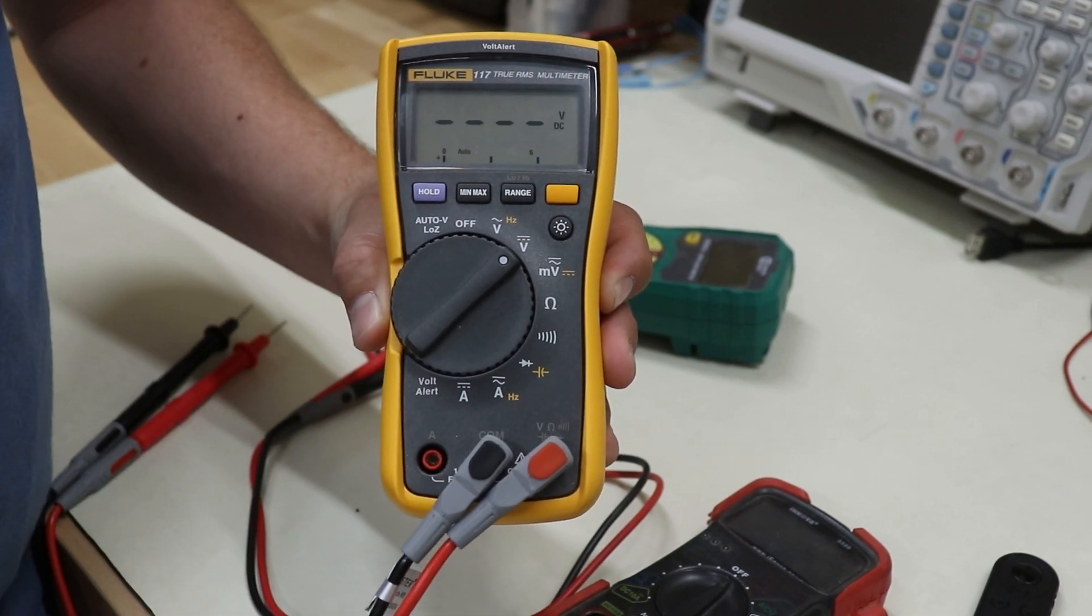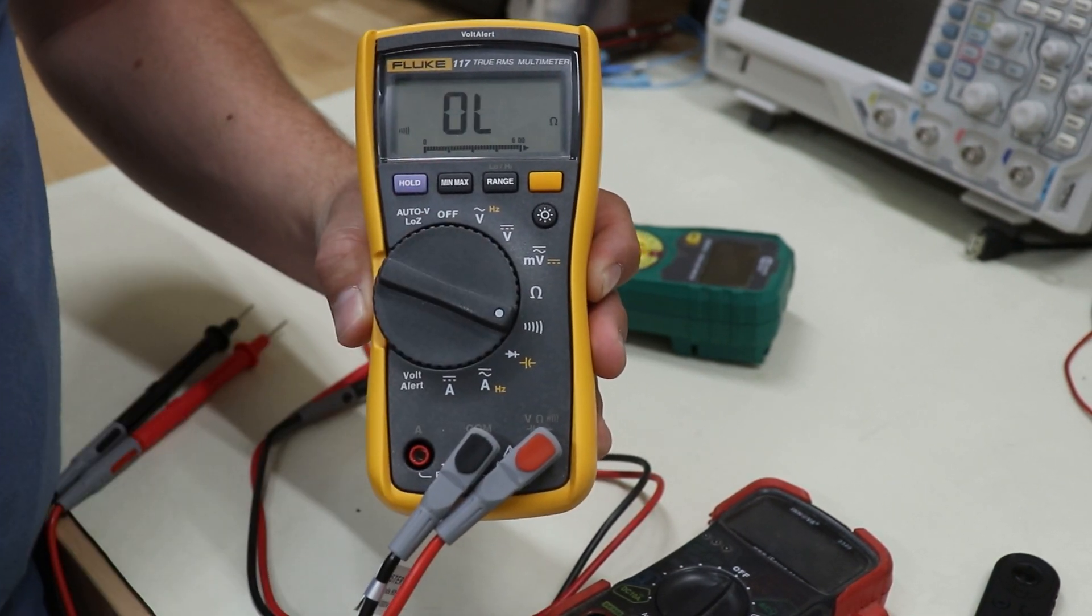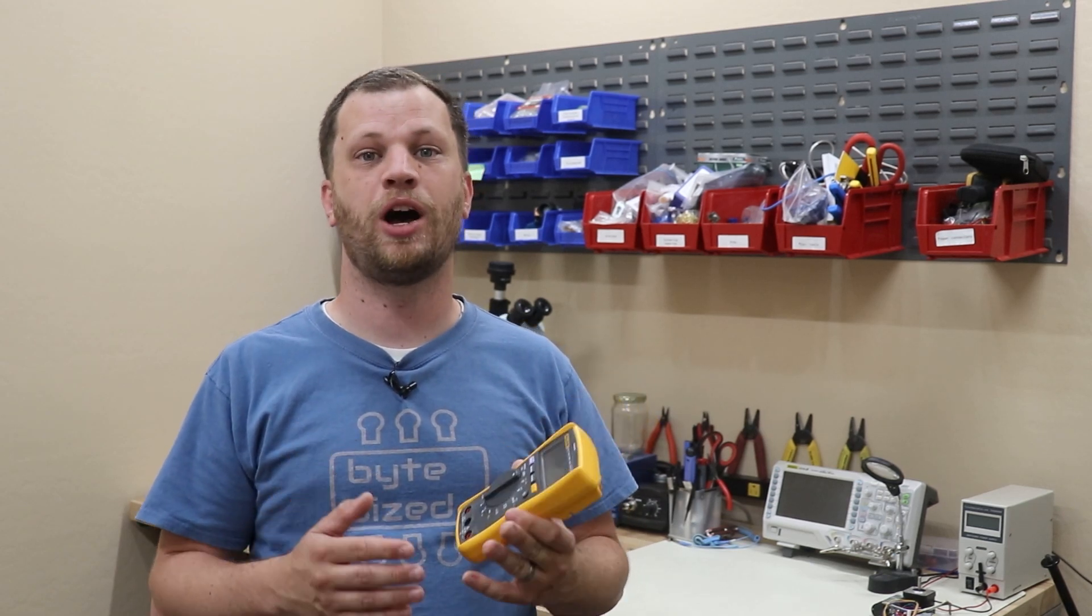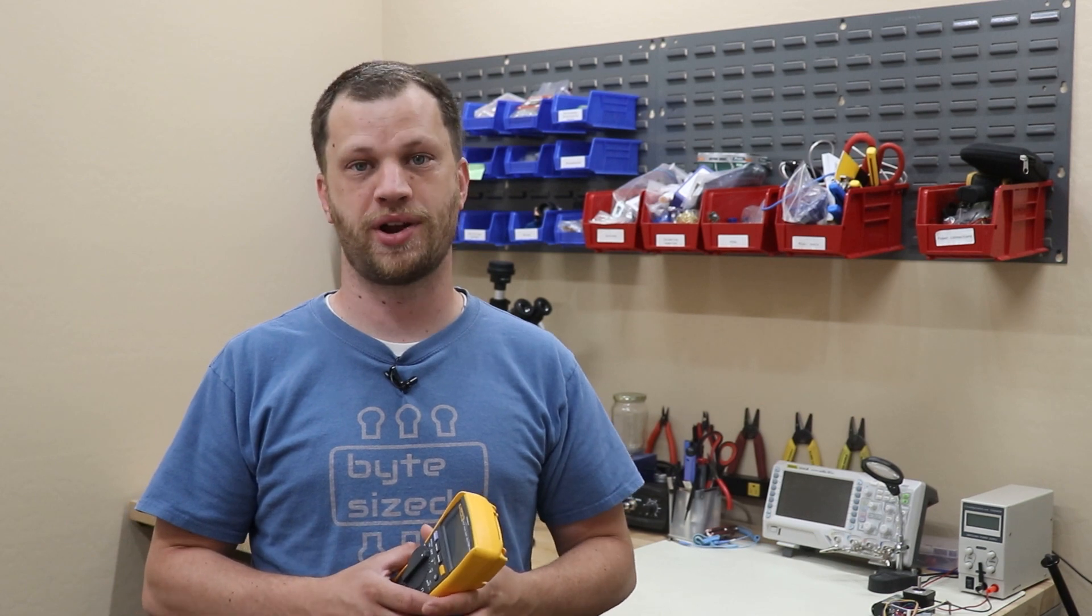A multimeter is a tool that helps you measure electrical properties such as voltage, current, and resistance. If you're unfamiliar with what these terms mean, I'll put a link in the description for a really great tutorial made by SparkFun Electronics.